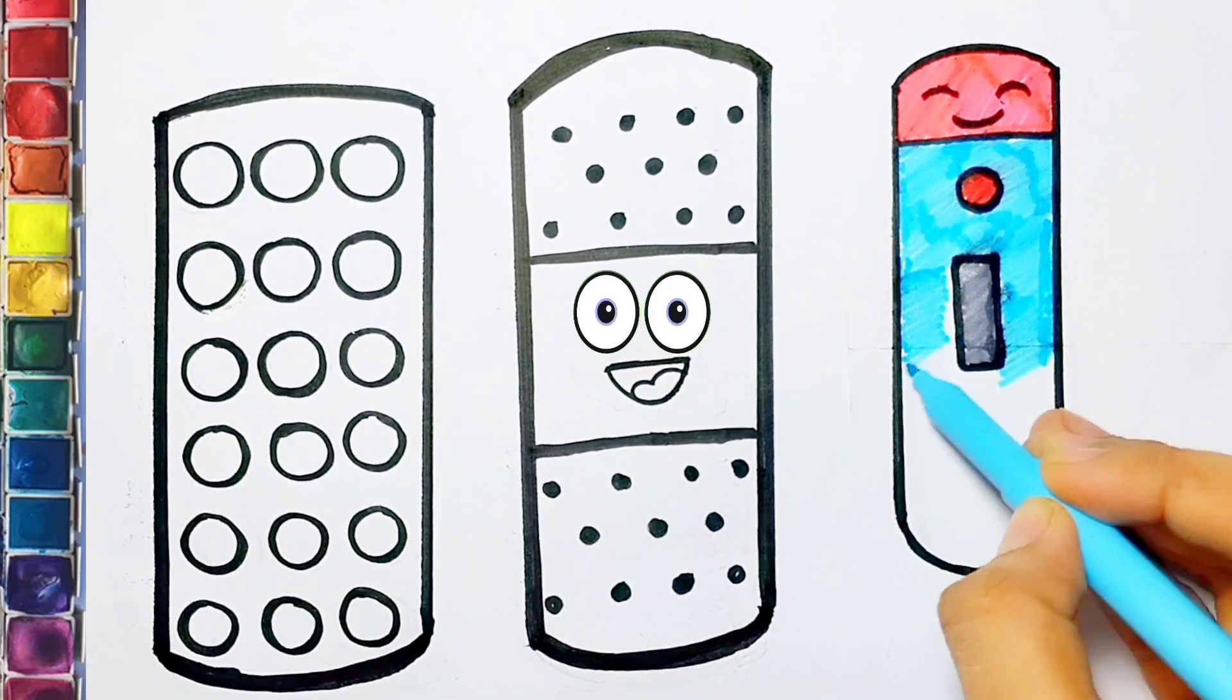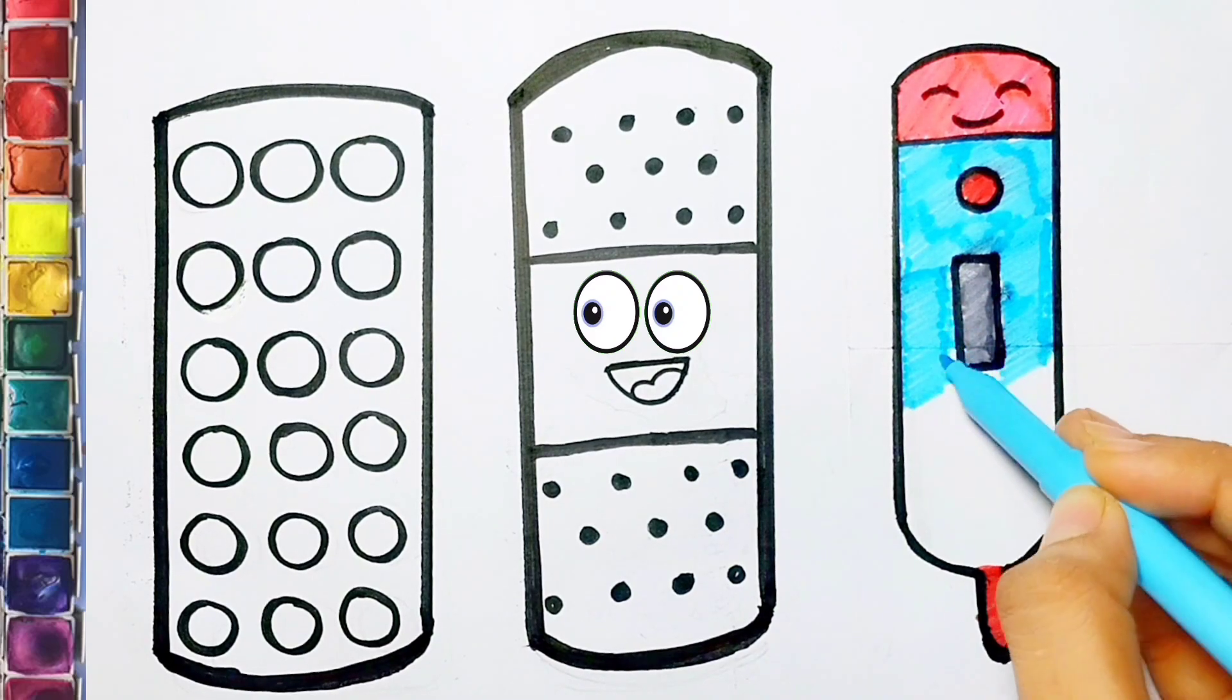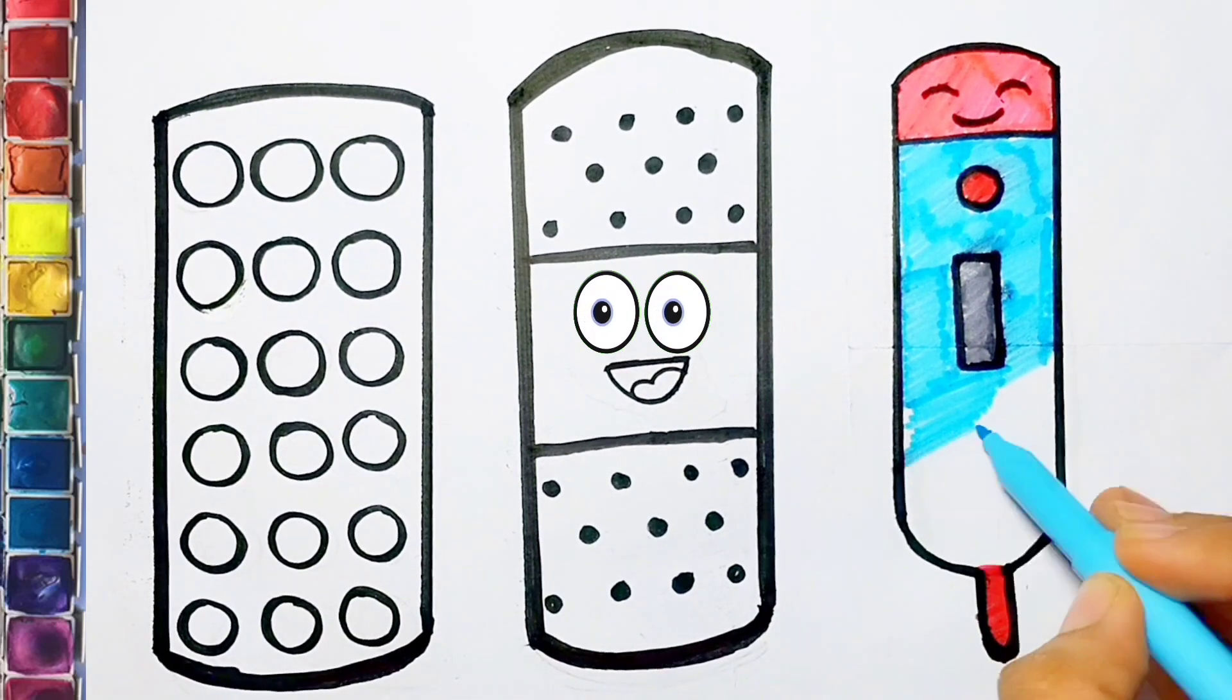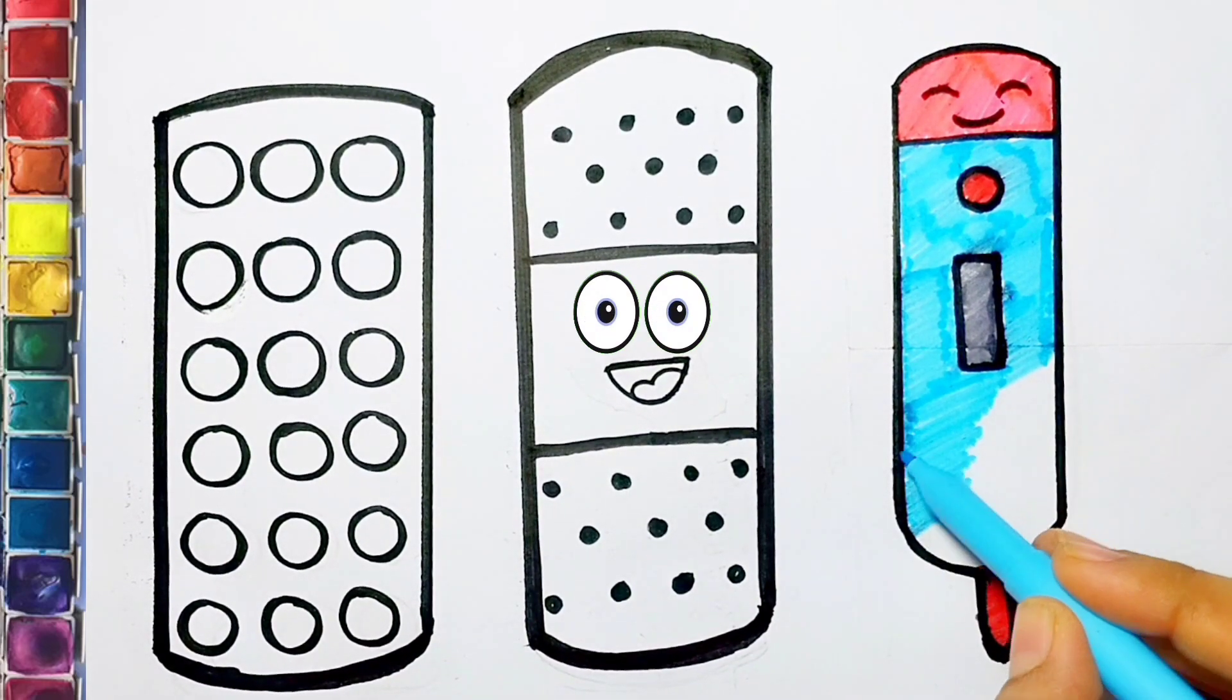Rain, rain, go away. Come again another day. Little Jordan wants to play. Rain, rain, go away.